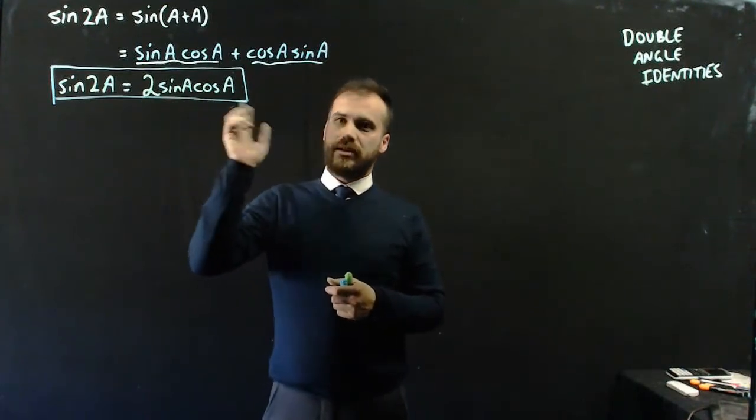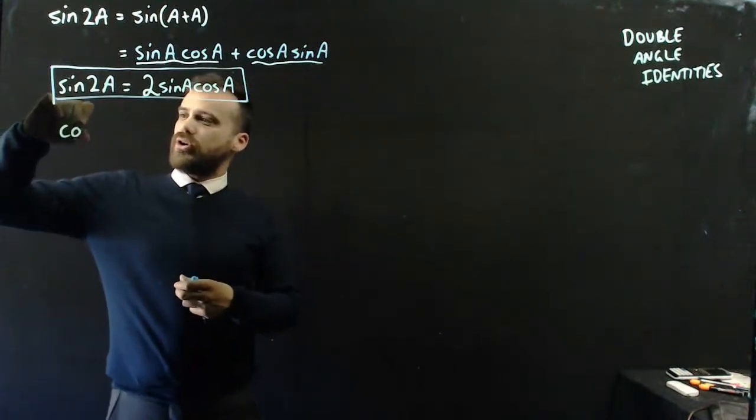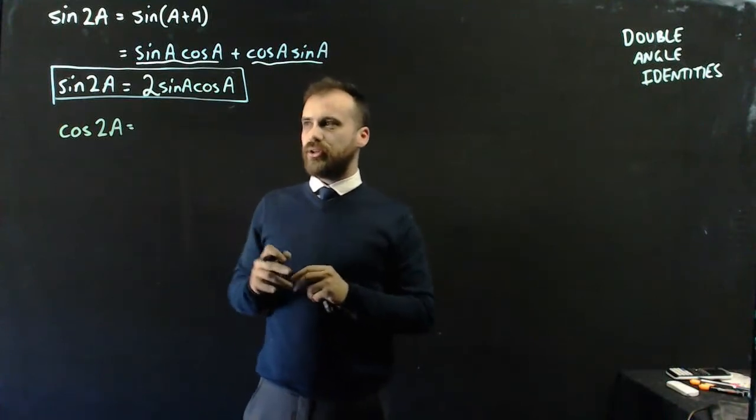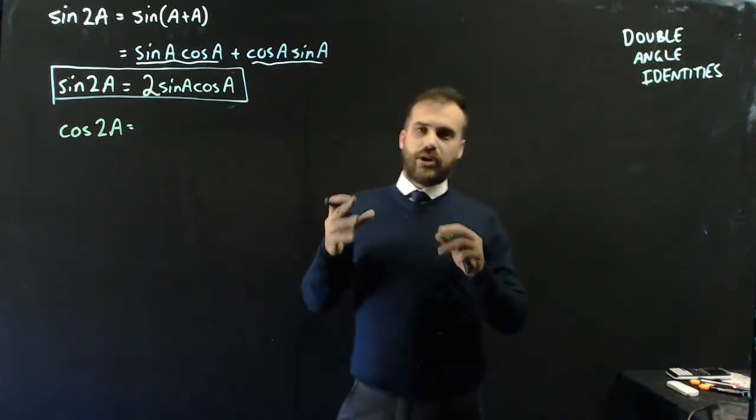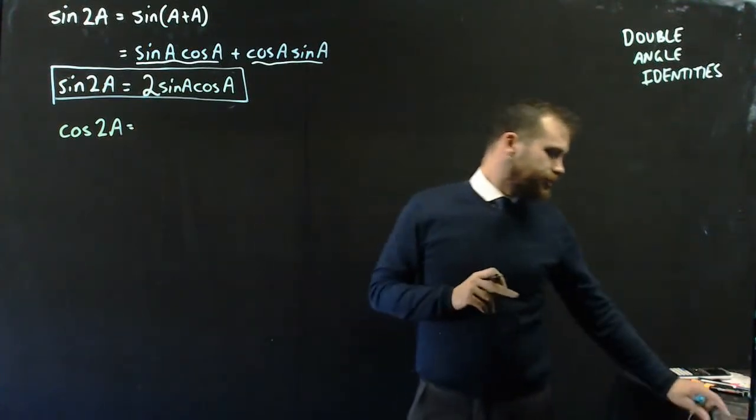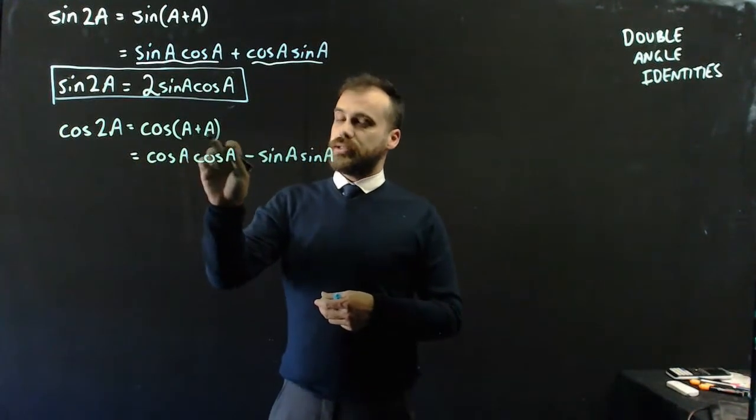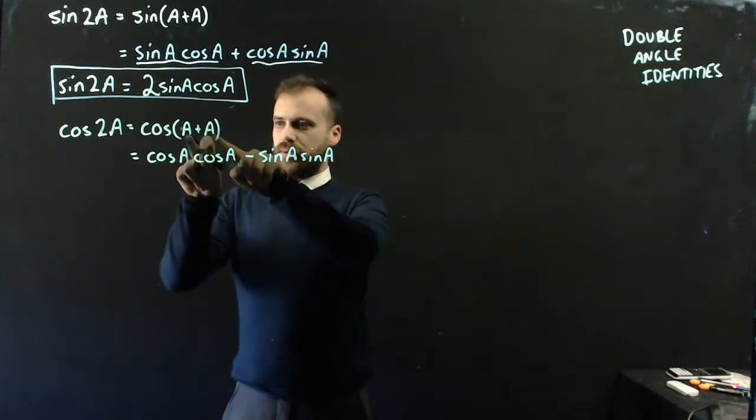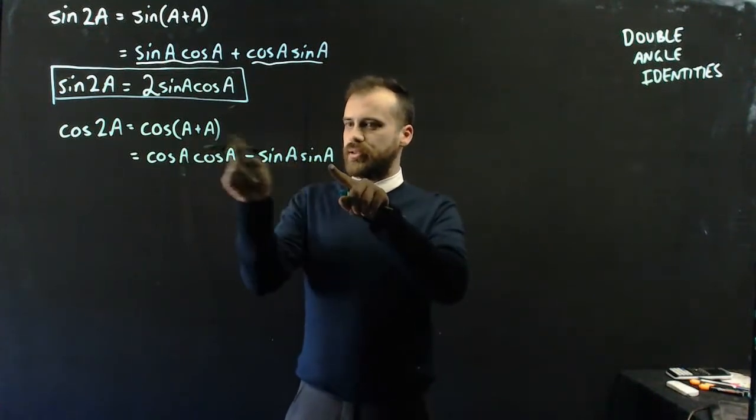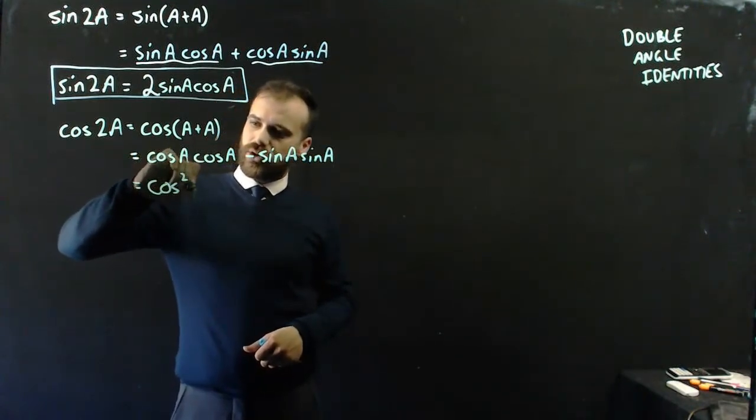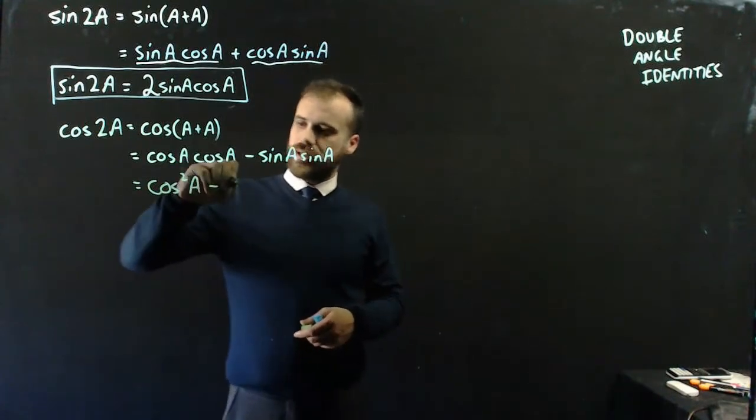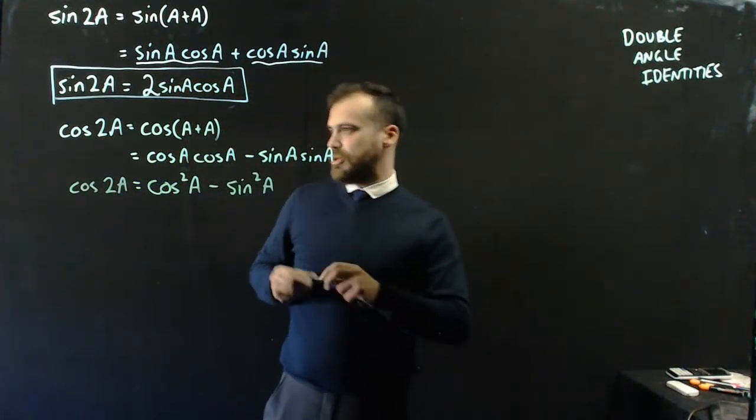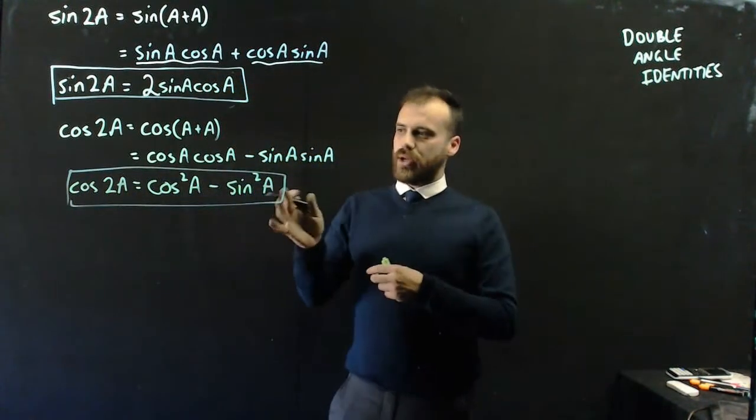You can do the same thing for cos(2A). You might want to pause the video here and think about what is the cosine double angle identity, and obviously you're going to use the cosine angle sum identity to help you figure out what this one should be. Cos(2A) is the same as cos(A+A). We put the A in here and the B in there, but because they're both A, we're putting the A's in there like that minus sin(A)sin(A). Cos(A) times cos(A) is obviously cos²(A), and sin(A) times sin(A) is sin²(A). So we get cos(2A) equals cos²(A) minus sin²(A).